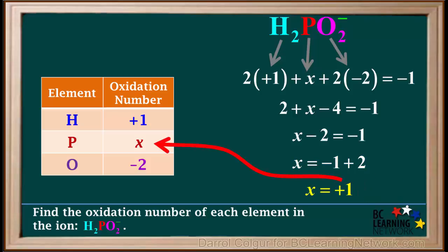So, we can say that the oxidation number of phosphorus in this ion is equal to positive 1. If you want a copy of the whole solution to this problem, you can pause the video, take a screenshot, and print it.